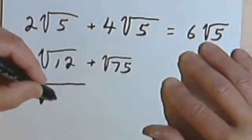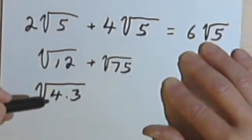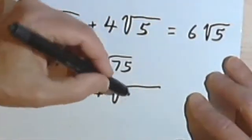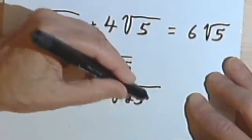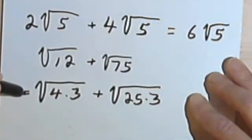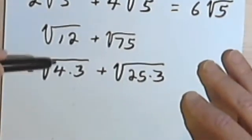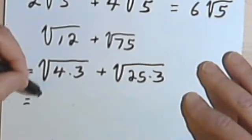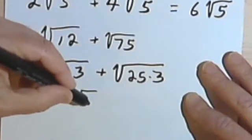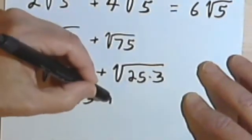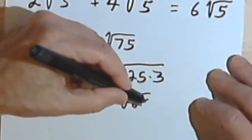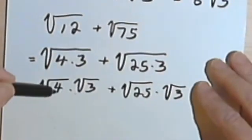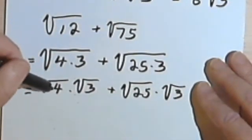I realize that 12 is 4 times 3, and 4 is a perfect square. At the same time, 75 is 25 times 3. Now using the product rule, I can rewrite each of these radicals as two separate radicals. So I'm going to have the square root of 4 times the square root of 3, plus the square root of 25 times the square root of 3.